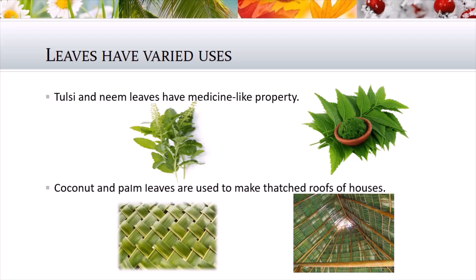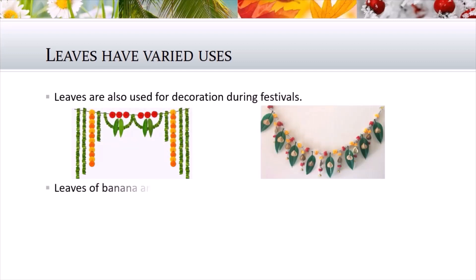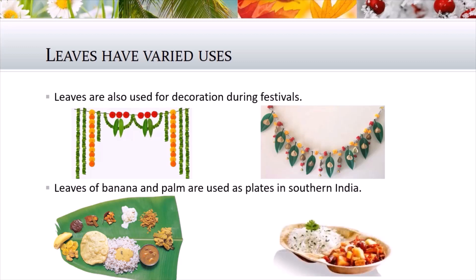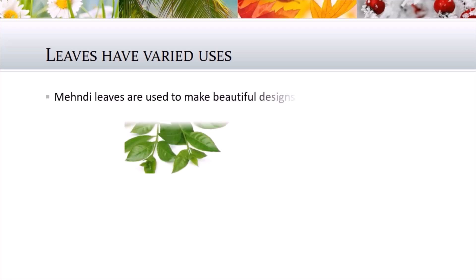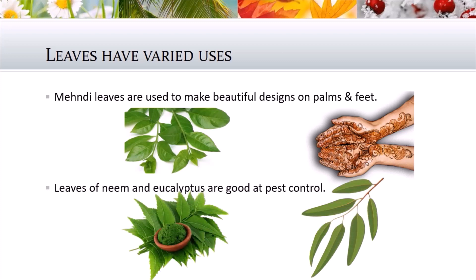Leaves are also used for decoration during festivals. Leaves of banana and palm are used as plates in southern India, which is also eco-friendly. Mehndi leaves are used to make beautiful designs on palms and feet during festivals and special occasions. Leaves of neem and eucalyptus are good at pest control and are used as organic pesticides.